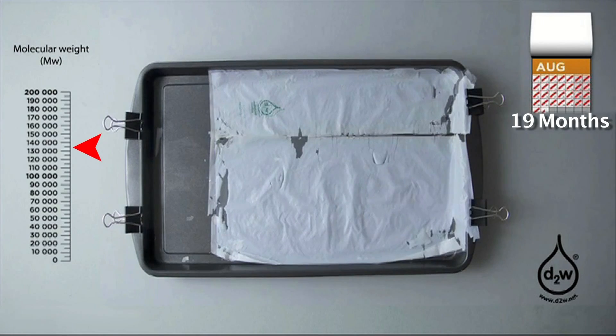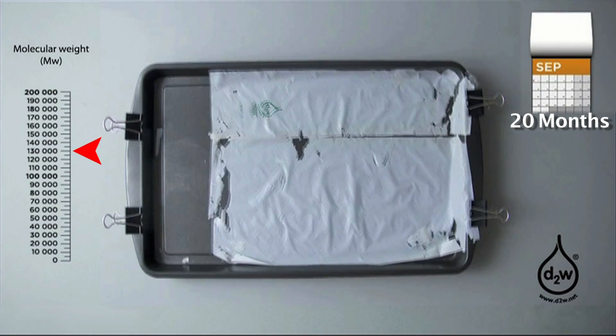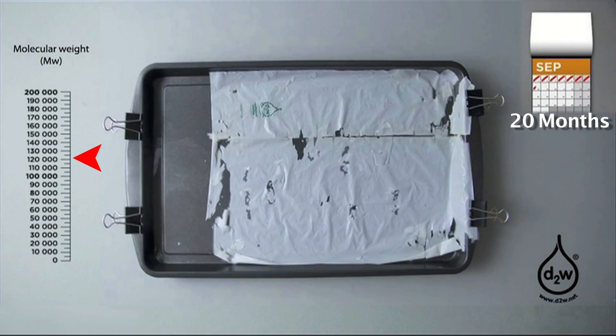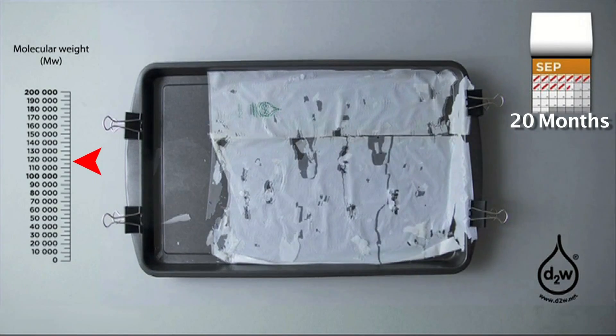At the end of the useful life of the product the D2W automatically breaks down the molecular structure of the polymer and forms harmless intermediates that are biodegradable.